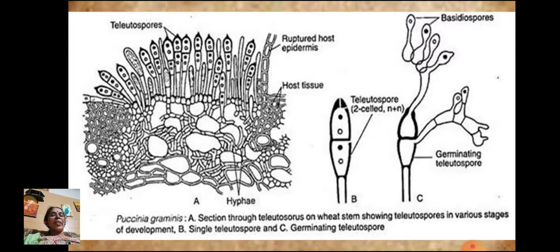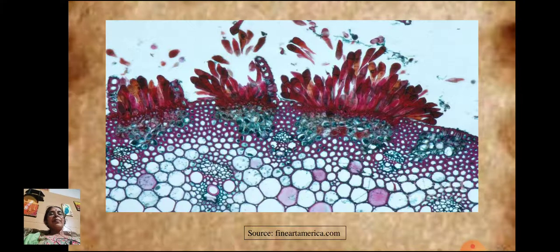The diagrams show: a section through the teliosaurus on the wheat stem showing teliospores in various stages of development; a single teliospore which is two-celled and binucleate; a germinating teliospore; and a section of the leaf showing the teliosaurus and teliospores.